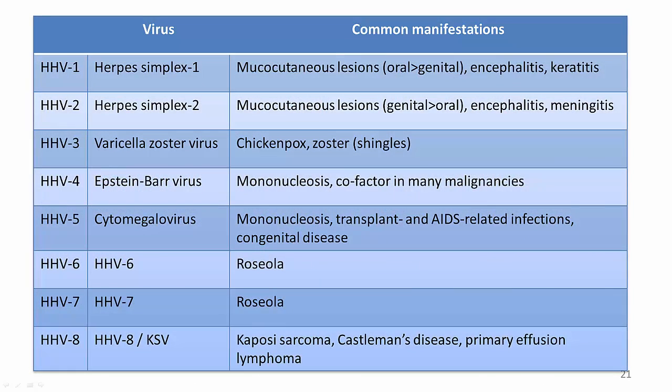This video has focused on the conditions associated with chronic Epstein-Barr virus infection. As summarized in this table, each of the eight human herpes viruses can be associated with both acute and reactivated disease manifestations.